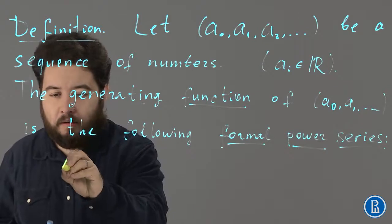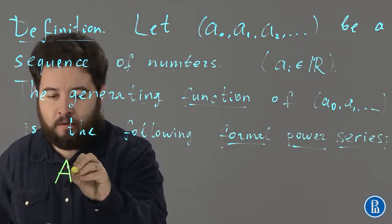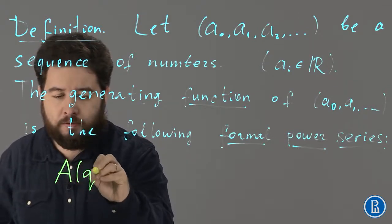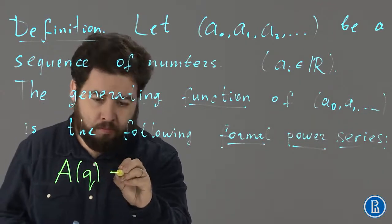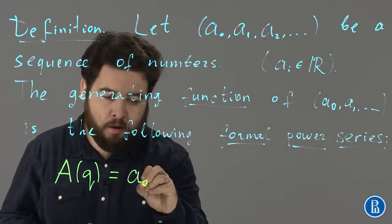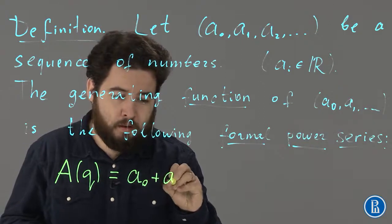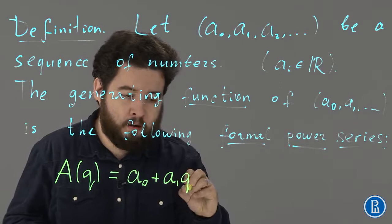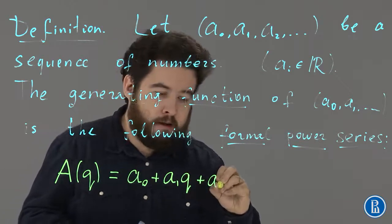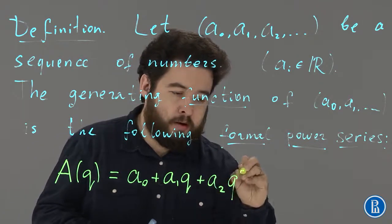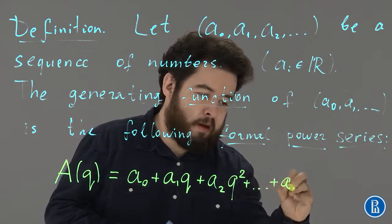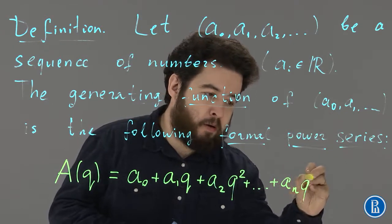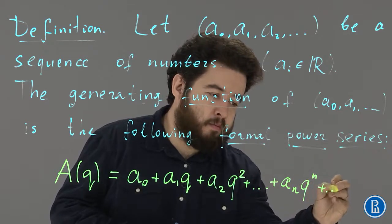We denote it by the capital A of Q, where Q is a formal variable. And this is A0, plus A1*Q, plus A2*Q-squared, plus etc. plus A_N*Q to the power N, plus etc.